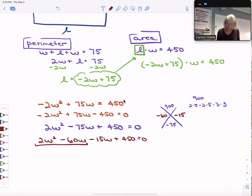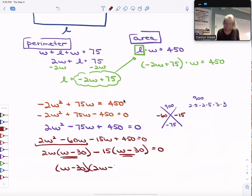Factor by grouping. I'm going to factor out the GCF of 2W. W minus 30, W minus 30. And then here I'm going to subtract out the GCF of 15, minus 15, W minus 30 again. And now my GCF W minus 30. And now I factored it.